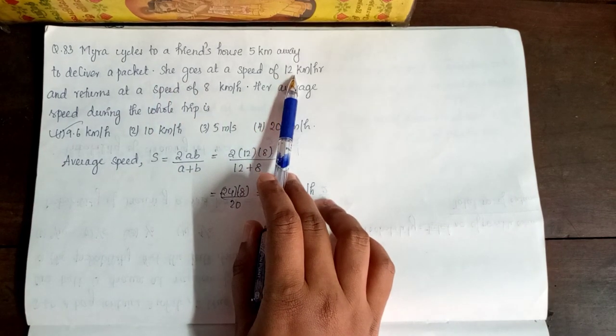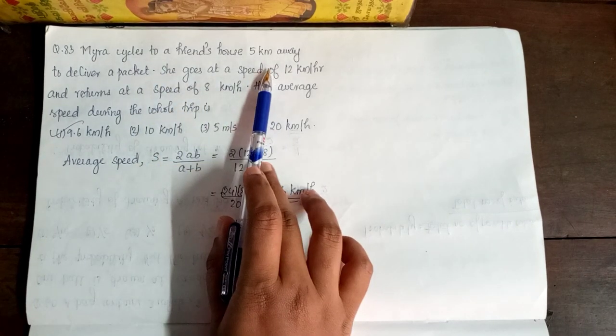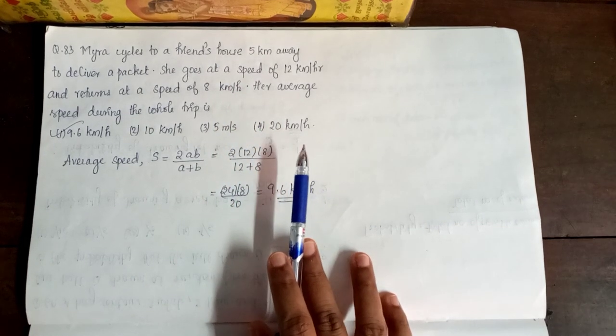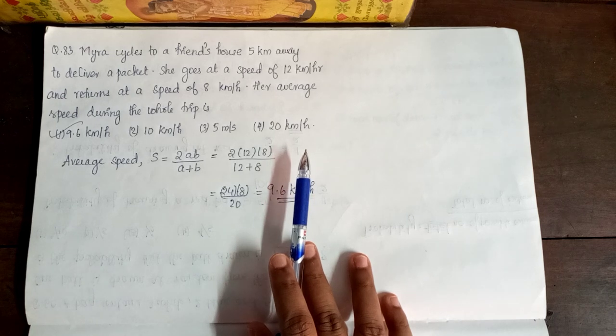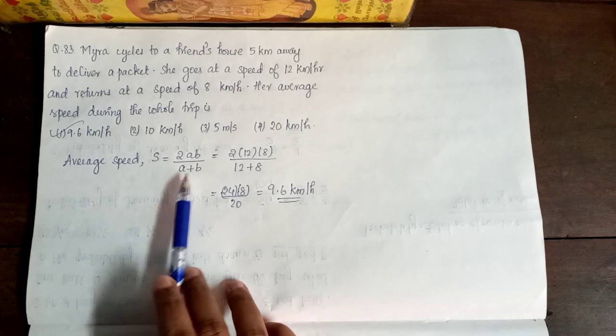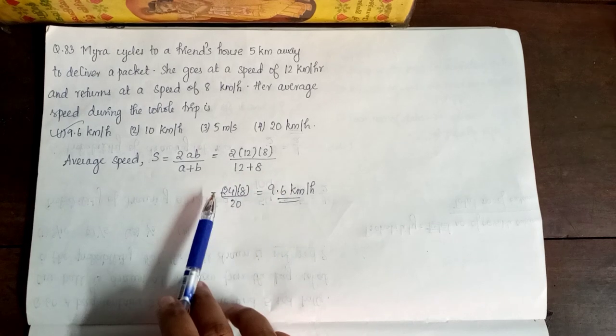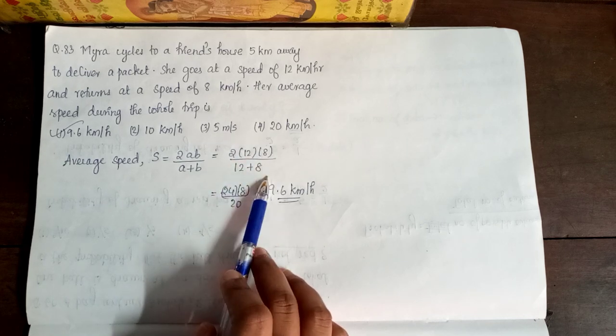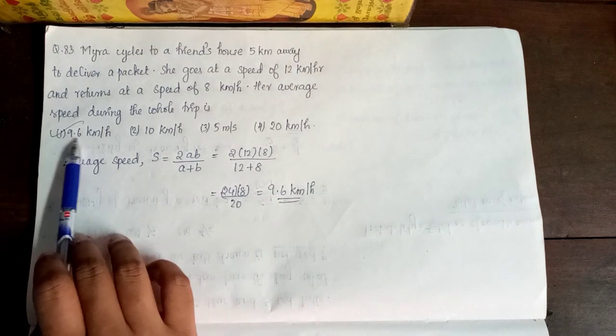So average speed is equal to s is equal to 2ab by a plus b. So that is equal to 2 into 12 into 8 divided by 12 plus 8. So option 1 is correct.